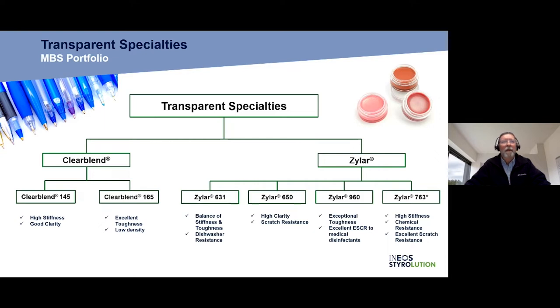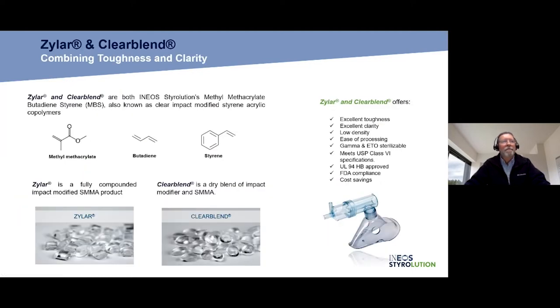Thank you Jorge, and thank you to everyone that's out there listening and giving us some time to tell you about our Xylar and ClearBlend materials. So, exactly what are Xylar and ClearBlend? Both are INEOS Styrolution's methylmethacrylate butadiene styrene, also known as MBS. What's the big difference between our Xylar and our ClearBlend? Xylar is a fully compounded product, meaning every pellet is homogeneous, pellet to pellet to pellet. ClearBlend is a dry blend, meaning that your customer would have to be more conscious of ensuring good mixing in his molding machine.